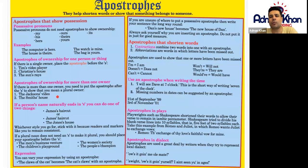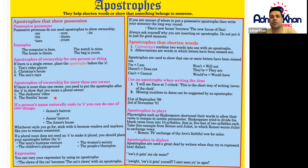Apostrophes of ownership for more than one owner: if there is more than one owner, you need to put the apostrophe after the S to show a plural owner. For example, the Jacksons' video — we know there is more than one Jackson in the family, so the apostrophe goes after the S. The Smiths' house means you're talking about more than one person called Smith. Always place the apostrophe after the S when there's more than one owner.